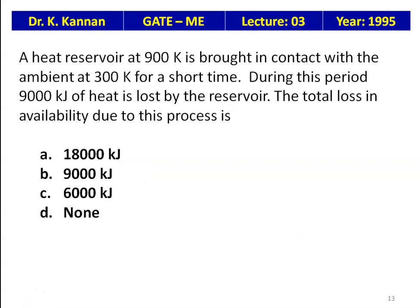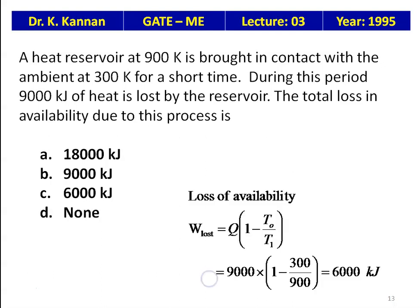A heat reservoir at 900 K is brought into contact with the ambient at 300 K. During this period, 9000 kJ of heat is lost by the reservoir. The total loss of availability: W_lost = Q(1 − T₀/T₁) = 9000 × (1 − 300/900) = 6000 kJ. The answer is 6000 kJ.